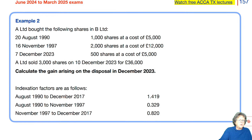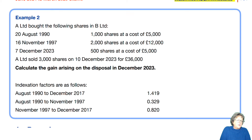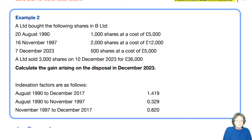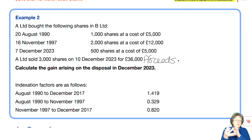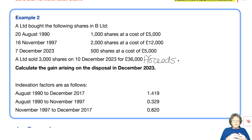Example number two: A Limited bought shares in B Limited. On the 20th of August 1990, they bought 1,000 shares at a cost of £5,000. In November 1997, they bought 2,000 more shares. And in December 2023, another 500 shares at a cost of £5,000. Calculate the gain arising because on the 10th of December they sold 3,000 of these shares for £36,000. This is all about finding the cost, because we have several costs — £5,000, £12,000, and £5,000 — plus indexation. The matching rule tells us the cost of those 3,000 shares.